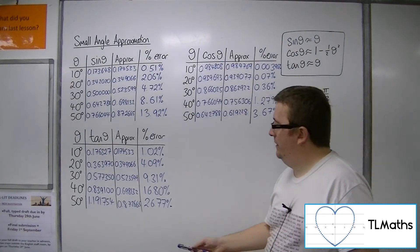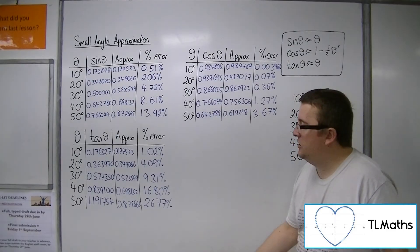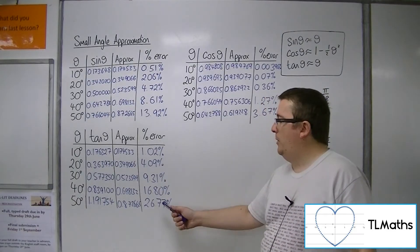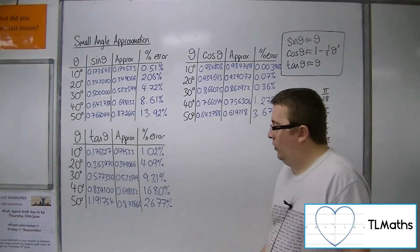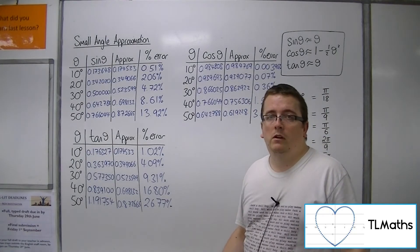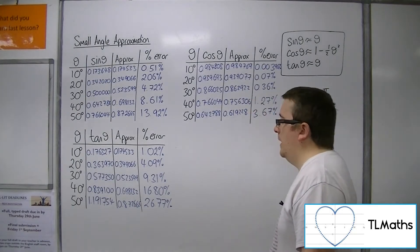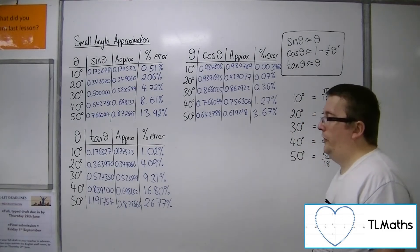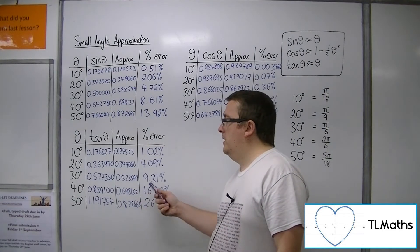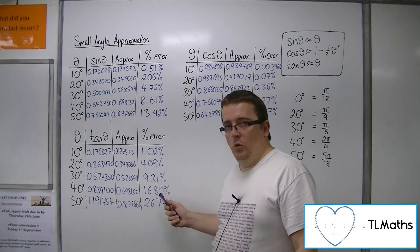And tan, on the other hand, is a lot worse. I mean, by 50 degrees, you're at 27% error from the actual figure. So, it is getting worse very quickly.